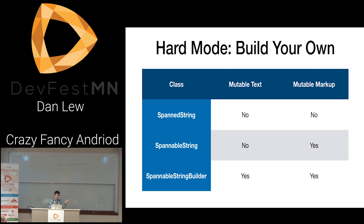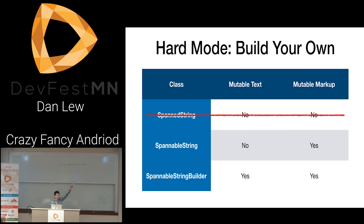SpannableStringBuilder can be useful if you're dynamically building things, because you can add text and spans at the same time. In fact, SpannableStringBuilder is generally what's behind EditText. SpanString is completely useless — you can't mutate any of it, so you can't add spans to it. The only way to create a SpanString with spans is to first use one of the two lower classes and then turn it into a SpanString. And SpanString is actually a SpannableString — they use the same implementation.